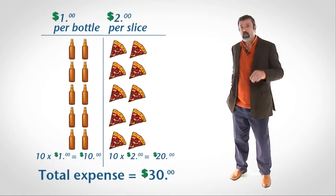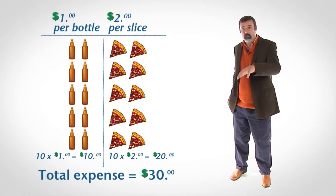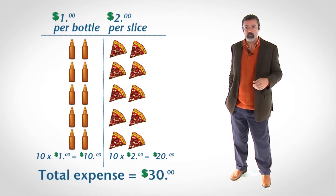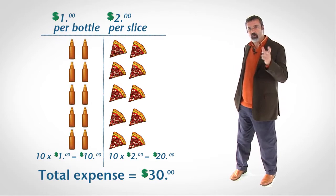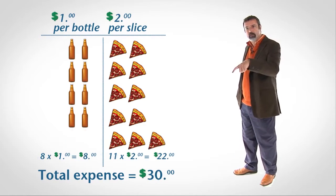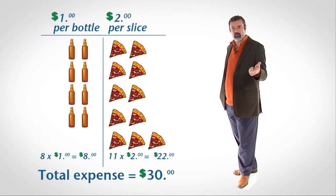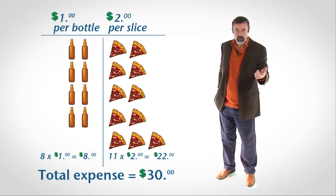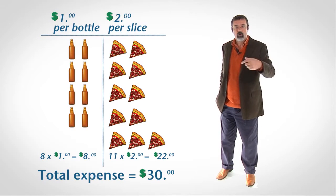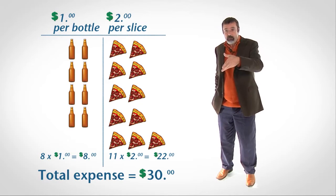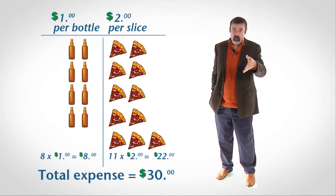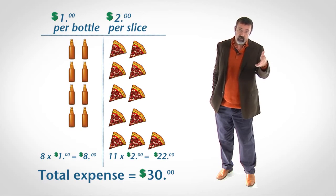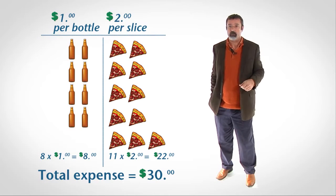For example, suppose you have ten beers and ten pizzas. Your total expense is thirty dollars. If you exchange two beers for one pizza, you're left with eight beers and eleven pizzas. Your total expense is now eight beers times a dollar plus eleven pizzas times two dollars a pizza, or thirty dollars.